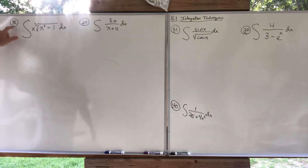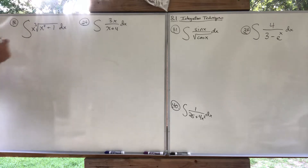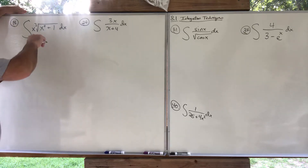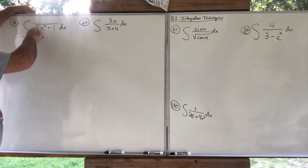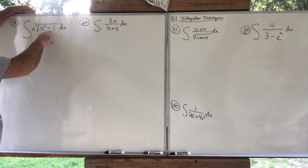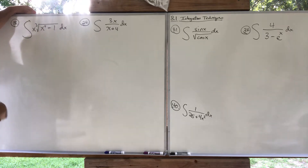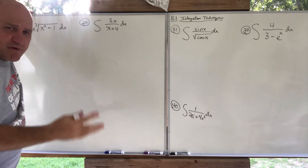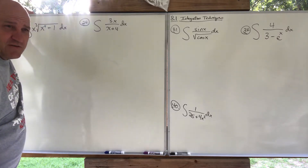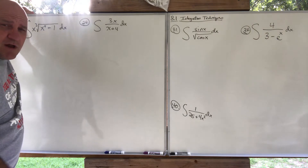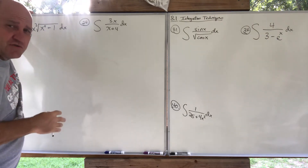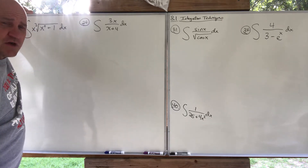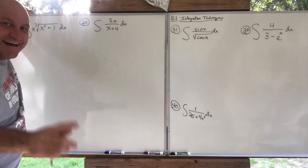Let's go in order. Number 18 from the book: this is an indefinite integral — the integral of x³ under the square root of x⁴ + 1, dx. We have our basic rules memorized, and the main technique here is u-substitution, a change of variable. That's probably useful here.